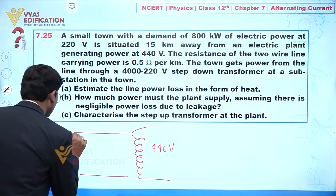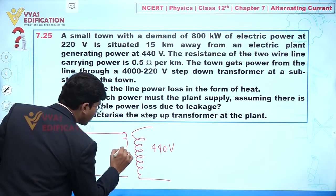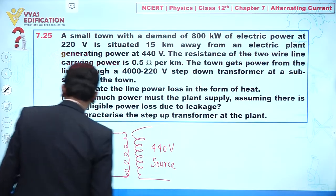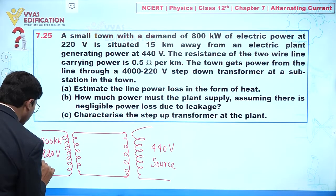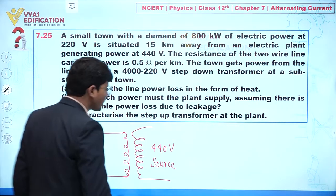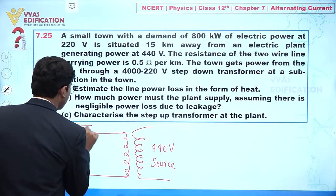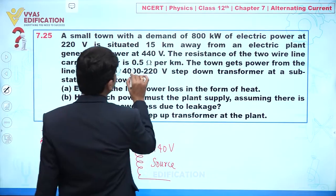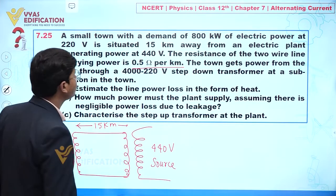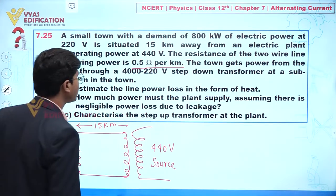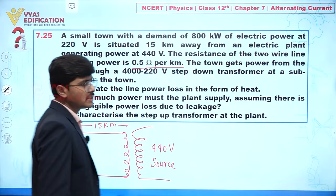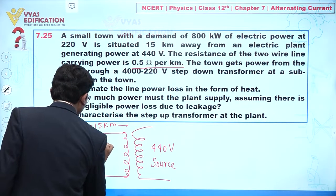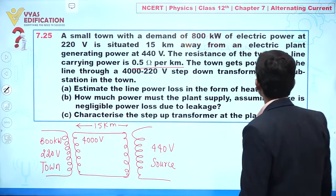The resistance of the two-wire line carrying power is 0.5 ohm per kilometer. These two lines carry the power from the power station to the small town over a distance of 15 kilometers. The town gets power from the line through a 4000/220 volt step-down transformer, so the secondary side has 220 volt and the primary side has 4000 volt.